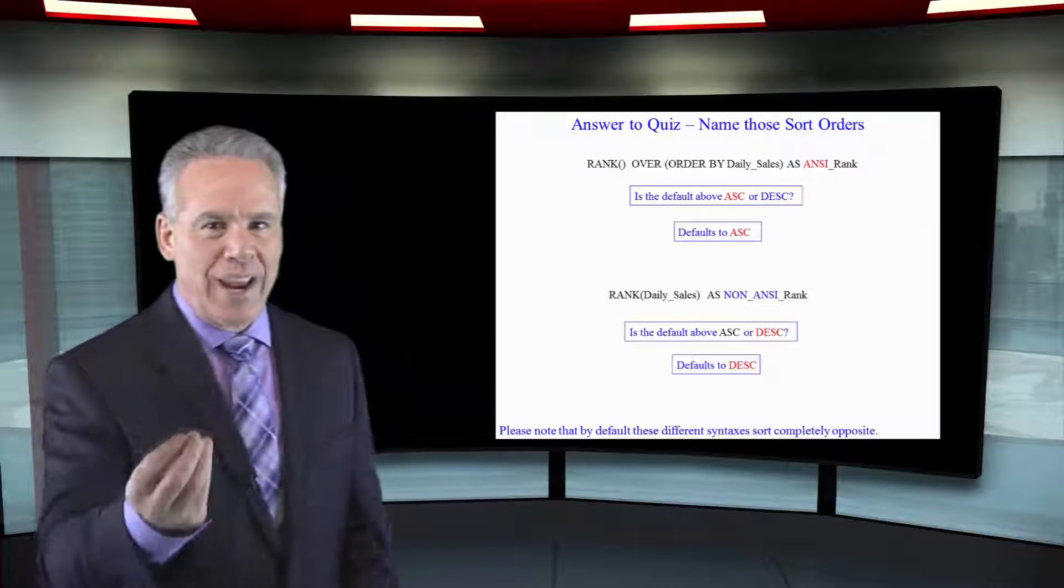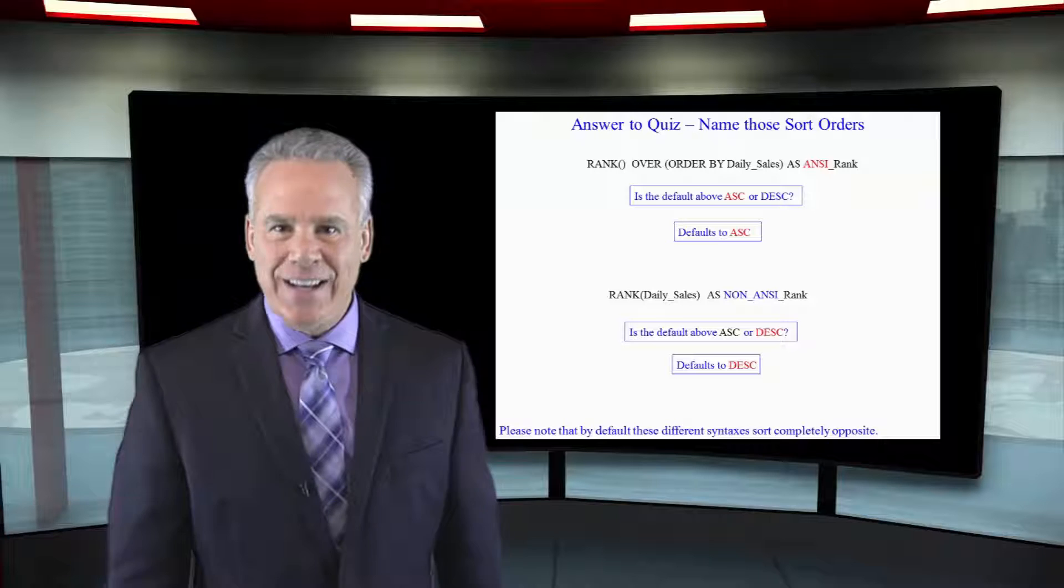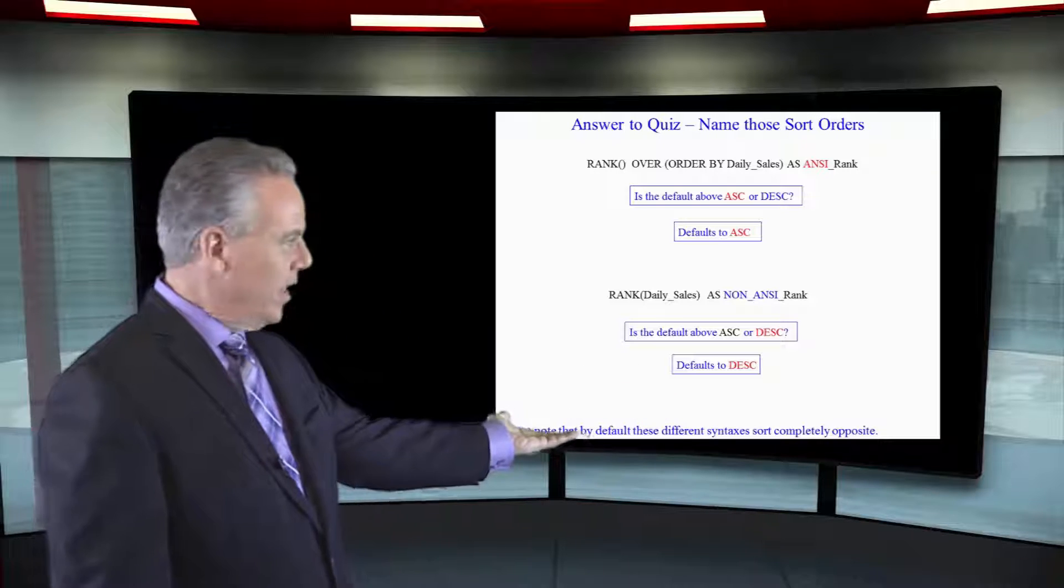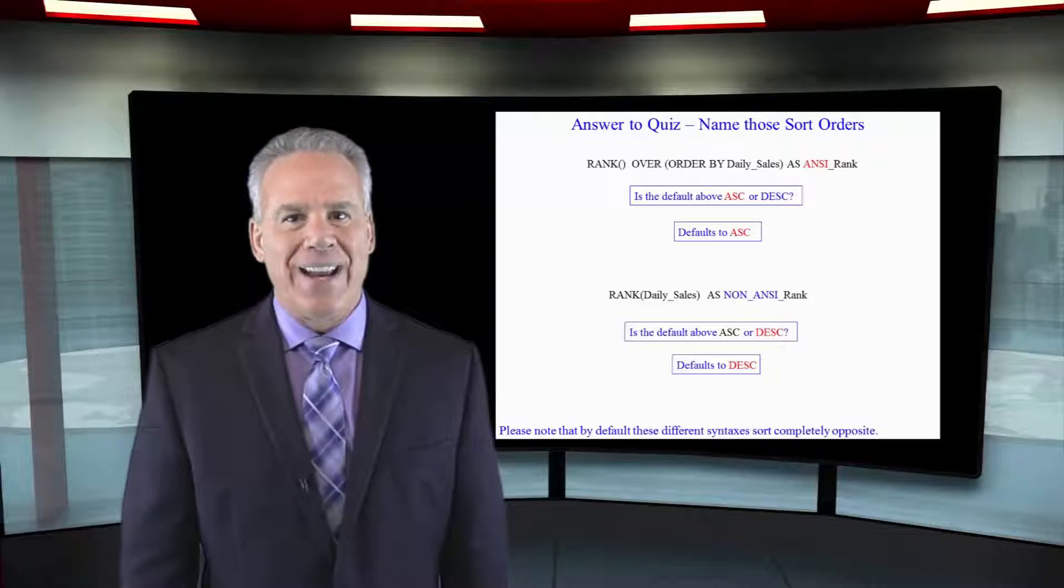Any time you use a rank that's an ANSI rank, it's going to default to ascending order. As you can see at the bottom, we have a Teradata version of this, and it's always going to sort in descending order by default.